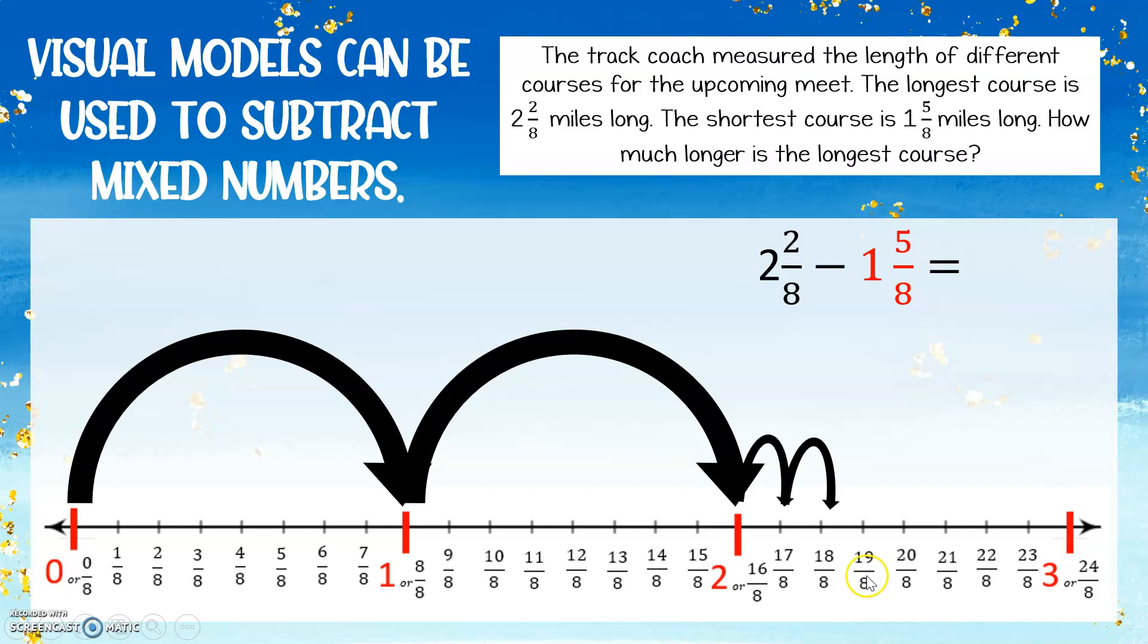So I'm left with 18 eighths. But that's just telling us that 2 and 2 eighths is the same as 18 eighths. That's not solving our problem.